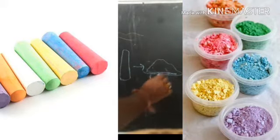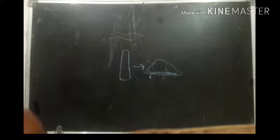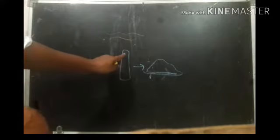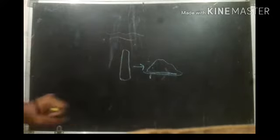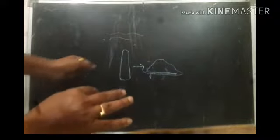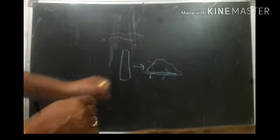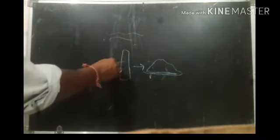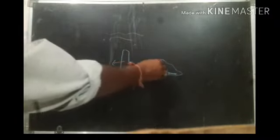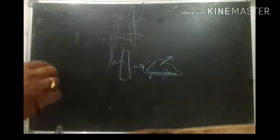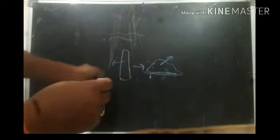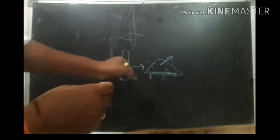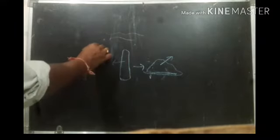You can collect the powder of the chalk piece at the bottom of the board. The chalk piece becomes powdery form. Actually, physically both are the same — whatever function the chalk piece performs, the chalk powder also performs the same thing. They have the same properties, same color.